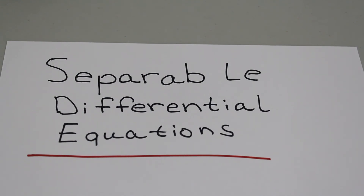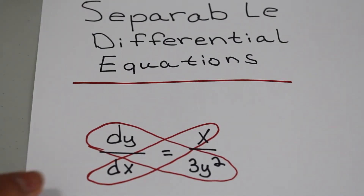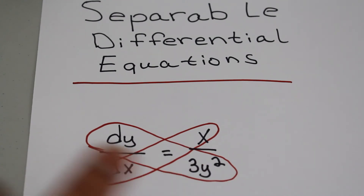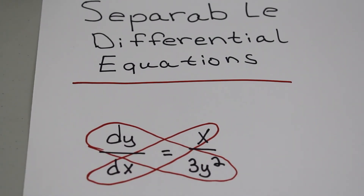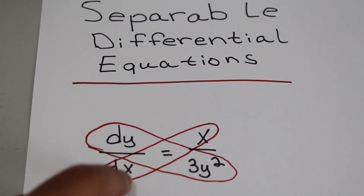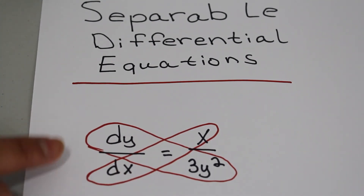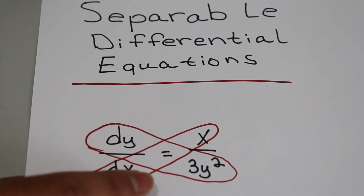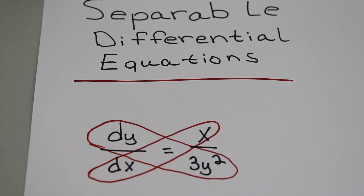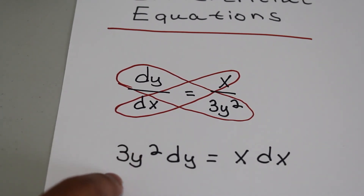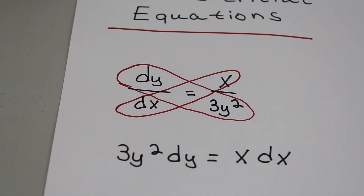The next common error involves separable differential equations. Always remember to put like terms together: y's go with dy and x's go with dx. For example, if dy/dx = x / (3y²), cross multiply to get 3y² dy = x dx, and then integrate both sides. Always remember to separate the variables first — it's very important.